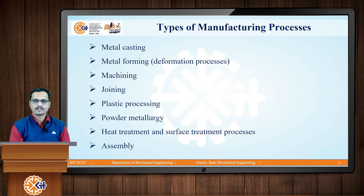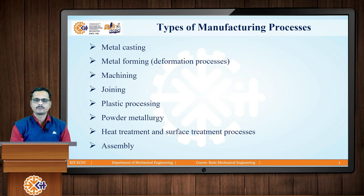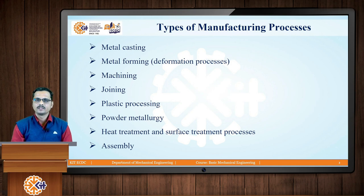Plastic processing, powder metallurgy, heat treatment, surface treatment, and assembly are sub-processes of the major ones. In this session, we are going to identify the basics involved in the four major manufacturing processes: metal casting, metal forming, machining, and joining.